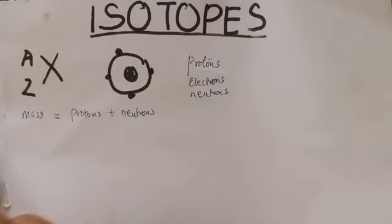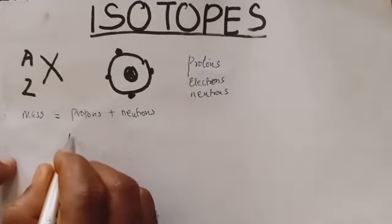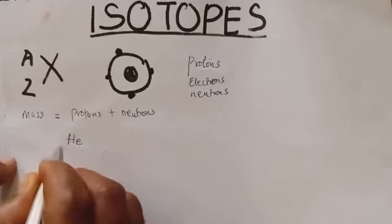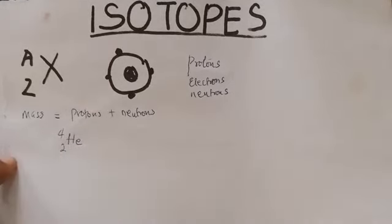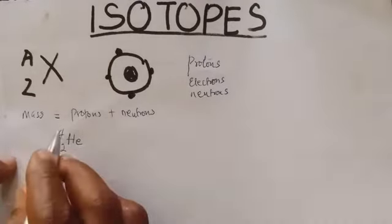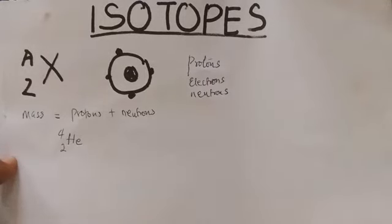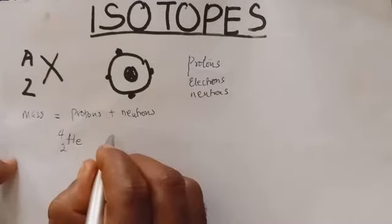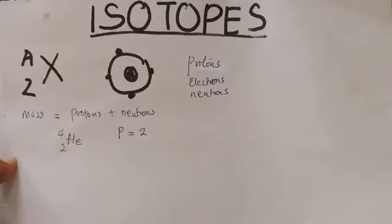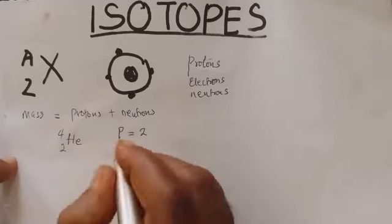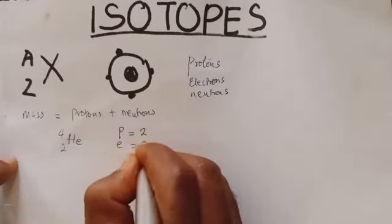So if you are given an atom like helium with atomic number 2 and mass number 4, it means the atomic number for helium is 2 and the mass number is 4. The number of protons in helium is equal to 2. Remember, in a neutral atom the number of protons is always equal to the number of electrons, so the number of electrons in helium is also equal to 2.